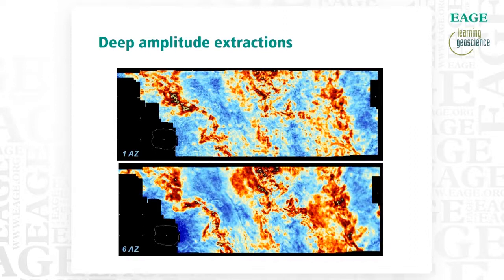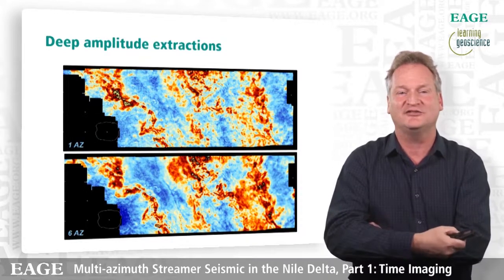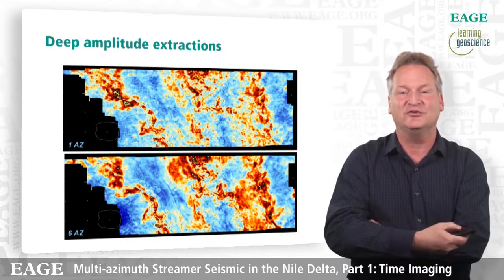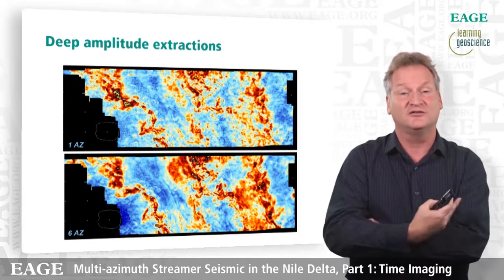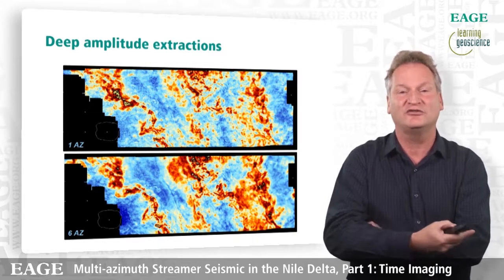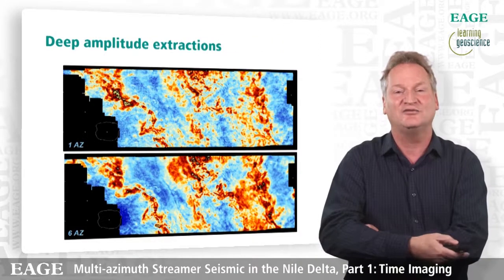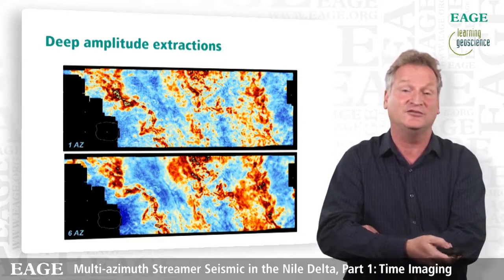Looking at amplitude extractions from the pre-Messinian, the top image is for single-azimuth and the bottom for multi-azimuth. In the bottom image we have a lot more amplitude continuity and a lot more detail — for instance, fold planes coming through a lot more clearly. Arguably, the features you can identify in the multi-azimuth image can also be found in the single-azimuth image, but the bottom image is clearly a lot better for optimally developing this field.